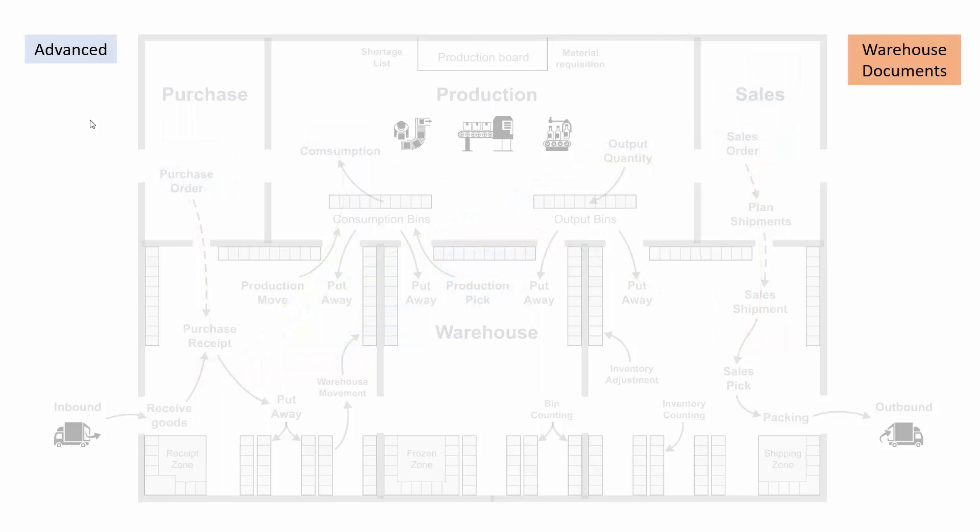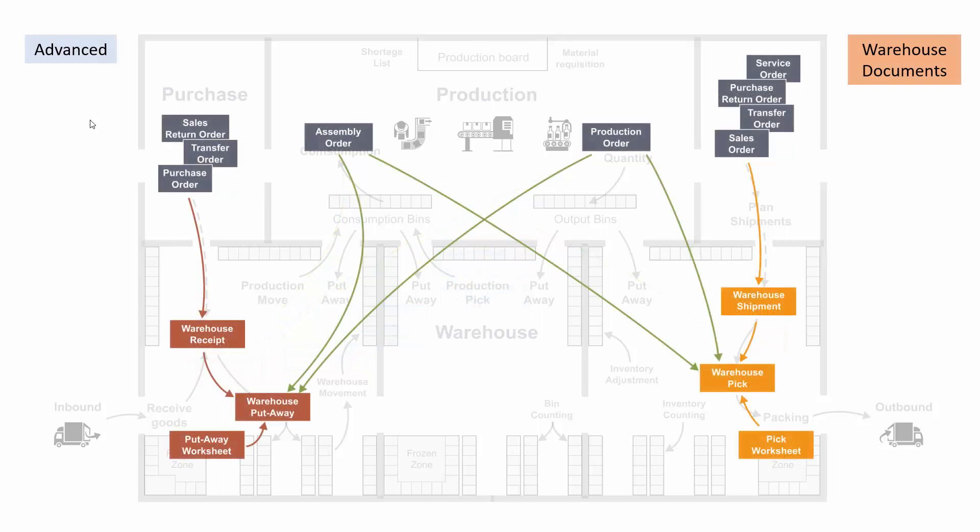Moving on to the advanced functionality, meaning you have a checkmark in require received or require shipment on the location card. The shipment required checkmark will apply documents on the outbound side: the warehouse shipment, the warehouse pick, and the pick worksheet. The require received checkmark will on the inbound side give access to functionality like the warehouse receipt, the warehouse put away, and the put away worksheet.